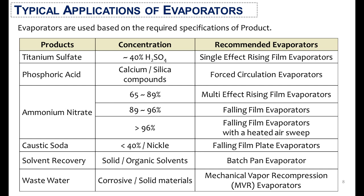Evaporators are selected based on the required specifications of the product. For titanium sulfate having a concentration of 40% sulfuric acid, single effect rising film evaporators are highly recommended. For phosphoric acid containing calcium and silica compounds, forced circulation evaporators are used. In the case of ammonium nitrate,